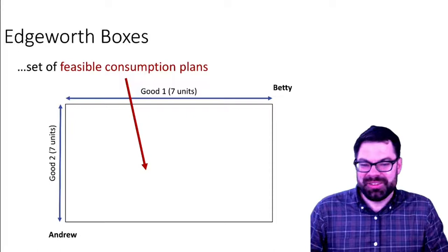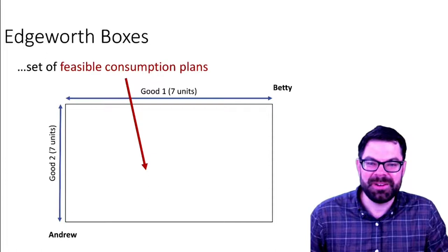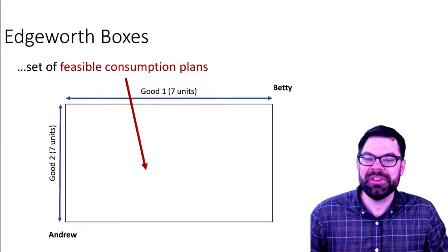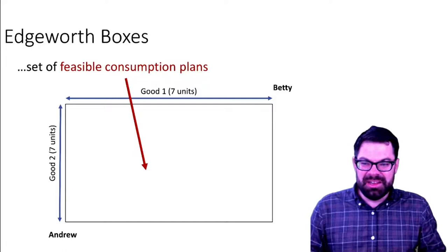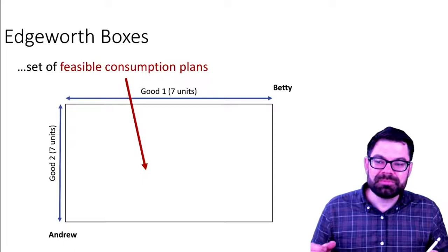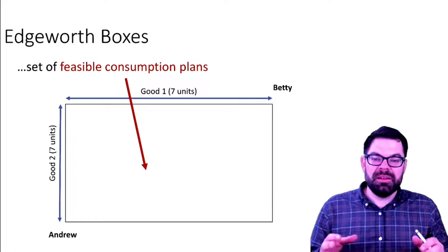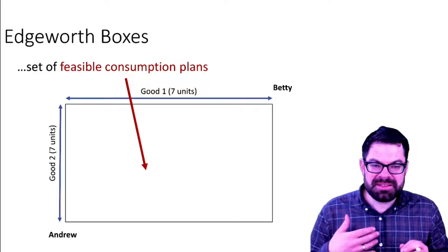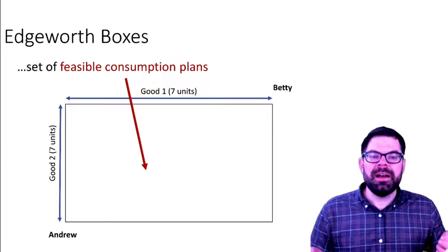Simply put, an Edgeworth box is a rectangle — there's nothing fancy about a rectangle itself. What matters is what that rectangle is really used for in the analysis. This box shows all the feasible consumption plans.